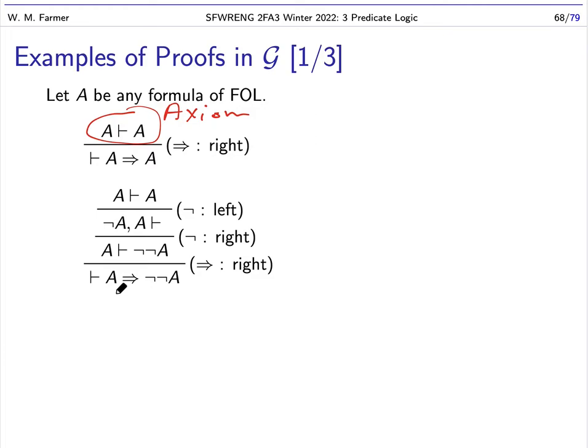Here's another proof: we're going to prove A implies double-negation A. I use implication right, which moves A to the left-hand side, leaving double-negation A on the right. Then I use negation right, which moves the formula to the left and removes one negation sign — so I get negation A and A proves nothing. Then I use negation left, which moves negation A to the right and takes off the negation sign. I get A and A, which is a logical axiom.